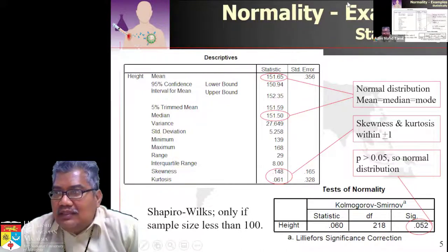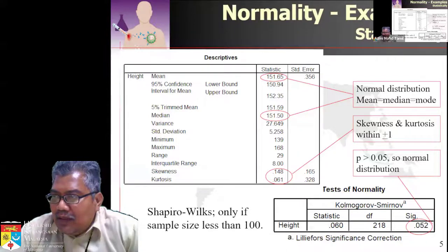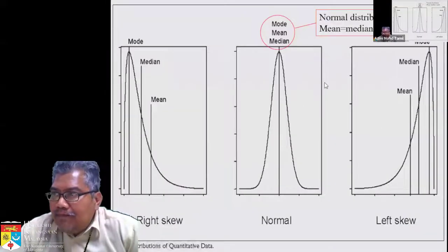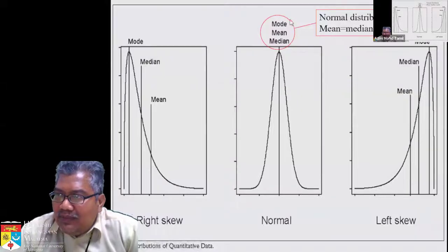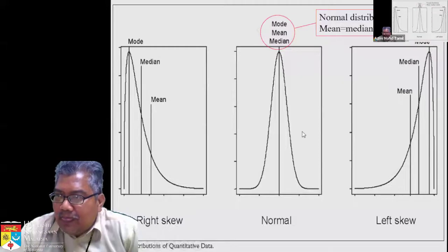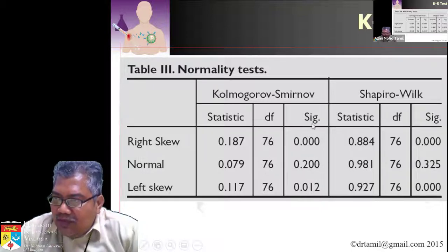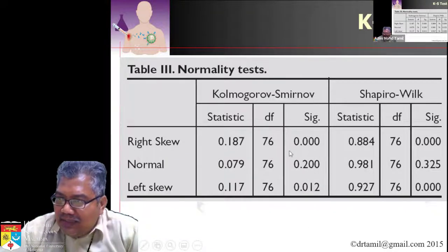Next is the Kolmogorov-Smirnov test. For this test, it should not be significant — the p-value should not be significant. If it is not significant, then your data is normally distributed. To repeat: mean, mode, and median must be the same; if they are the same the data is normally distributed. If the data is skewed, the KS test will become significant. If the data is normal, the KS test will not be significant.